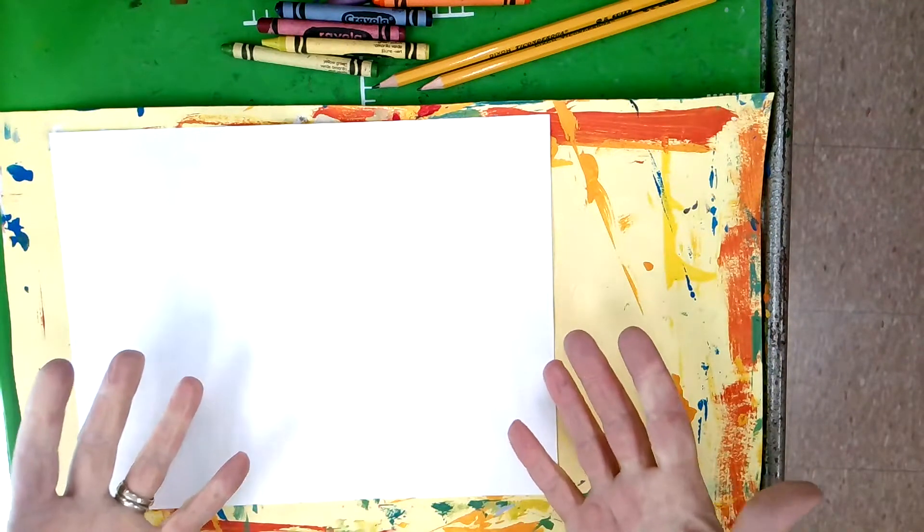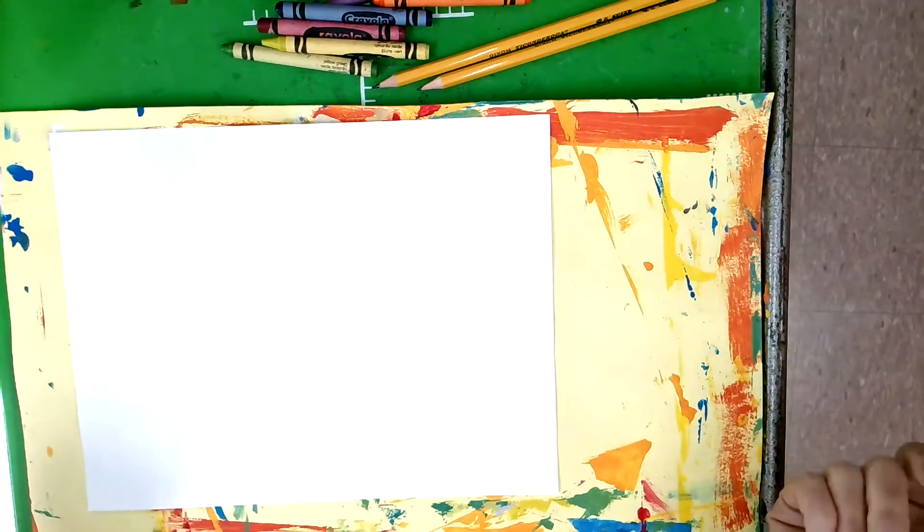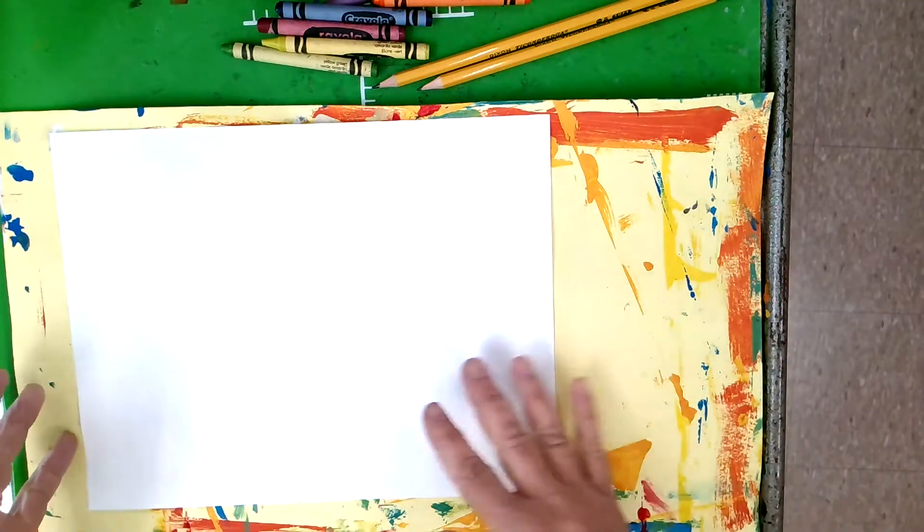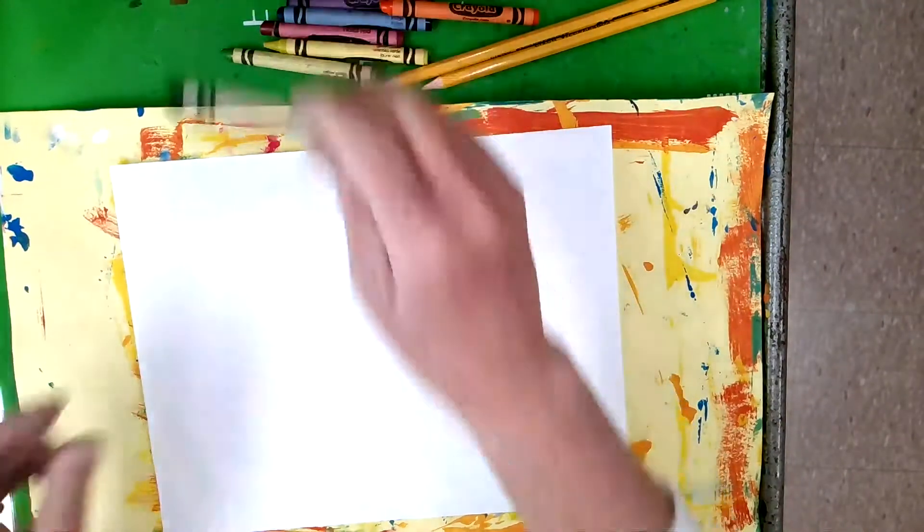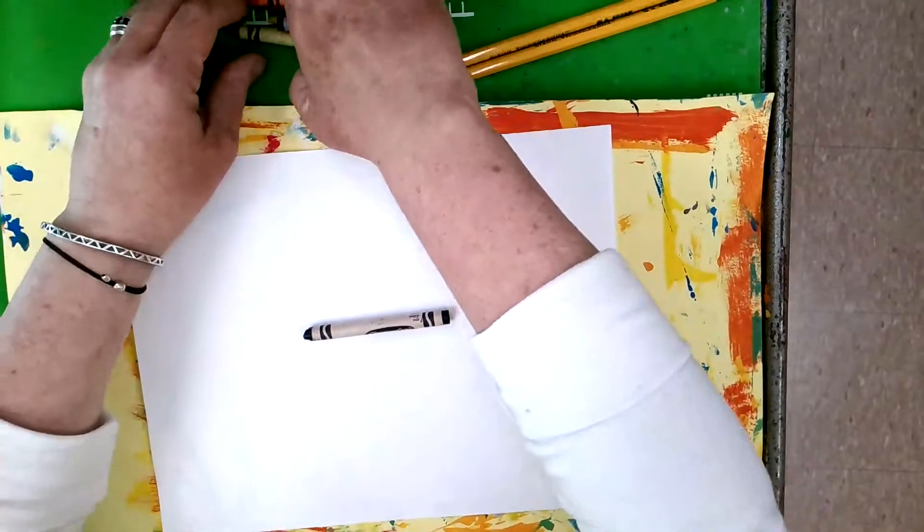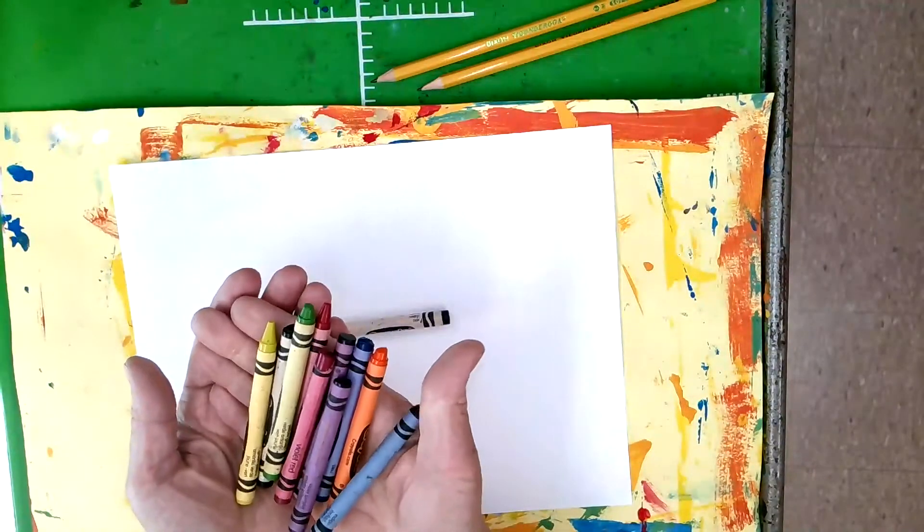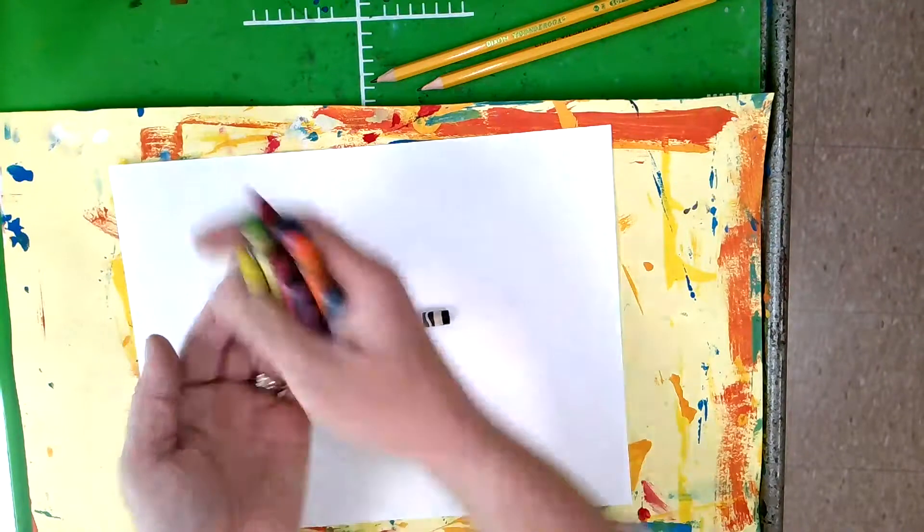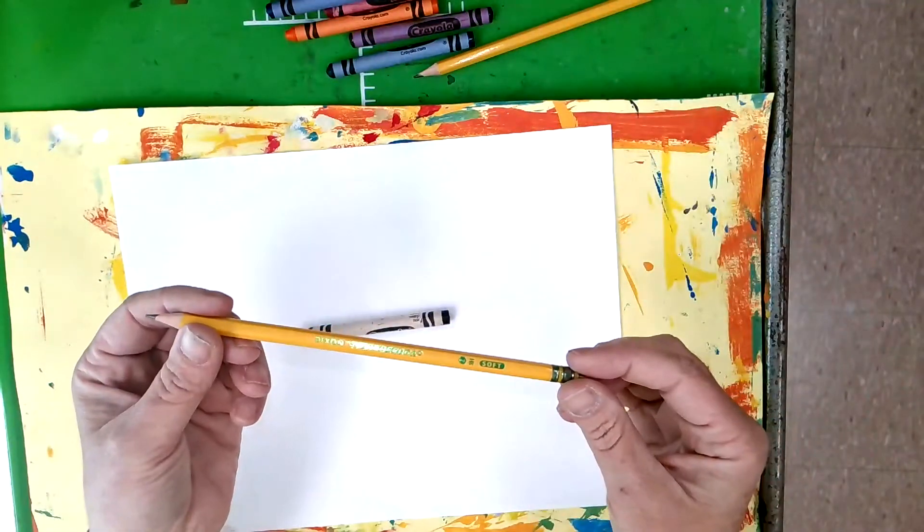Now I'm going to teach you how to make the symmetrical butterfly. What you're going to need for this is a blank piece of white paper, a black crayon, some other colors for coloring in your butterfly, and a pencil.